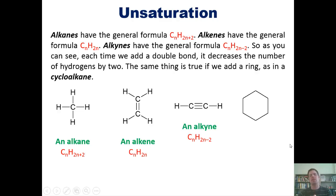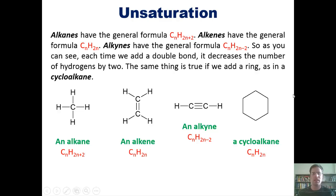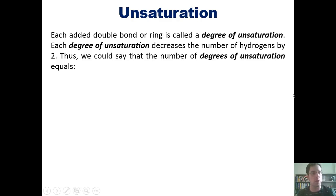So, as you can see, each time we add a double bond, it decreases the number of hydrogens by 2. Now, the same thing turns out to be true if you add a ring, as in a cycloalkane. So, if I add a ring, if you count the total number of hydrogens, keep in mind that there are 2 hydrogens coming off of each one of these carbons. It also decreases the total number of hydrogens by 2, relative to what you would have if you didn't have a ring. I hope that's all clear. Anyway, so each time we add a double bond or a ring, we call it a degree of unsaturation. Each degree of unsaturation decreases the number of hydrogens by 2.